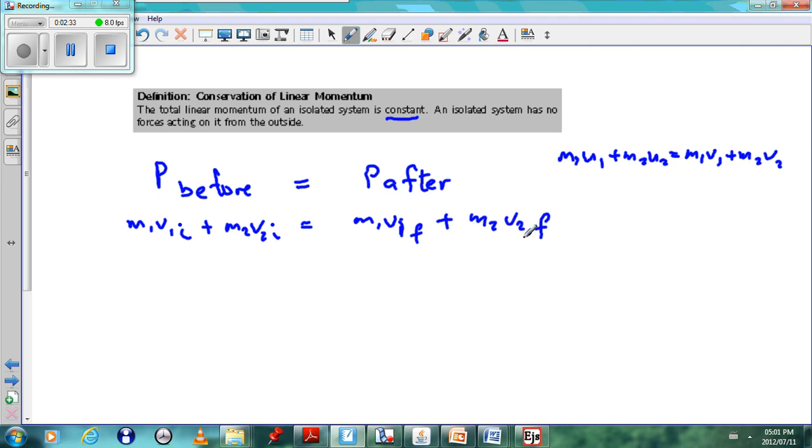This is important when we do sums for momentum. These are the type of sums that would usually be asked in the exam. Another important thing is we must take a direction as positive. So we will assume we're taking the right as positive.